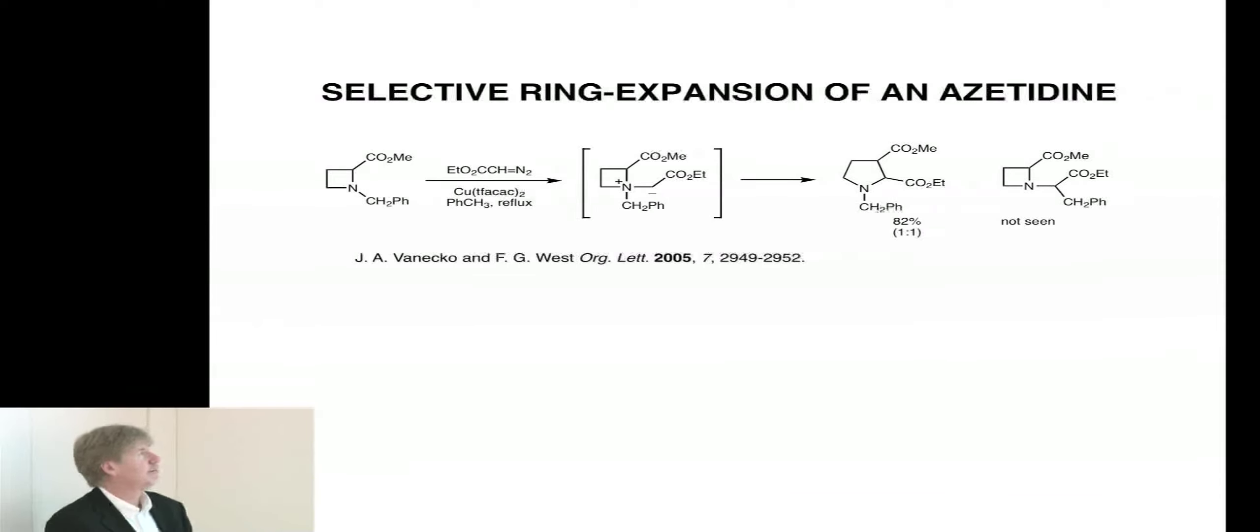Here we have a nitrogen in a four-membered ring, on the neighboring carbon an ester group, and attached also to the nitrogen, a benzyl group. With ethyl diazoacetate copper catalyst, we generate an ylid, an azetidineum ylid. This ylid has two options: it can migrate the benzyl group from nitrogen to carbon to give us this, or it can migrate the carbon-centered, or the ester-substituted carbon to give us a ring expansion product like this. This is the only thing we saw, 82% yield.